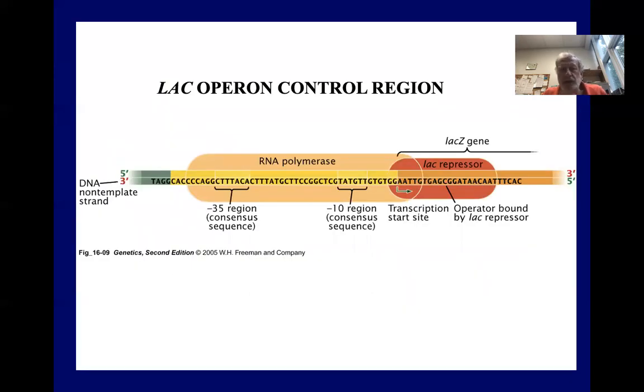So this is a close-up of the control region. And here you can see the RNA polymerase and the LAC repressor bound together. Now, since they overlap, in reality, they can't both bind at the same time. So either RNA polymerase binds and the operon is turned on, or the LAC repressor protein binds and the operon is turned off.